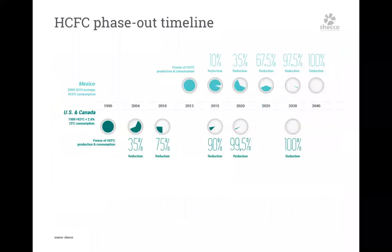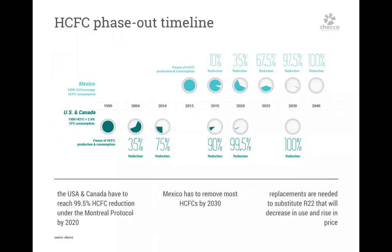On the HCFC phase-out at the international level, the U.S. and Canada must reach close to 100% HCFC reduction under the Montreal Protocol in the next four or five years, while Mexico has a little more time. The overall message is that replacements are urgently needed — especially for R22, which will decrease in use and rise in price, so more competitive solutions need to be found.